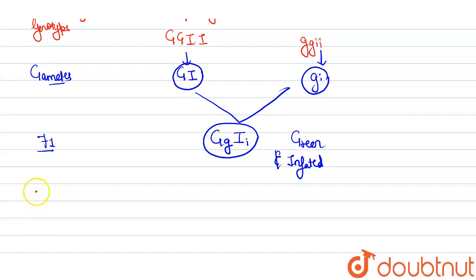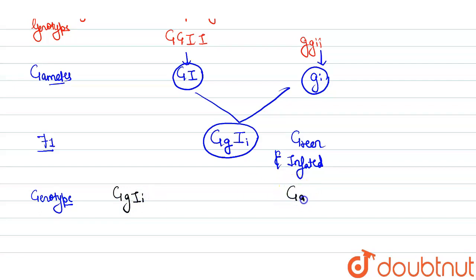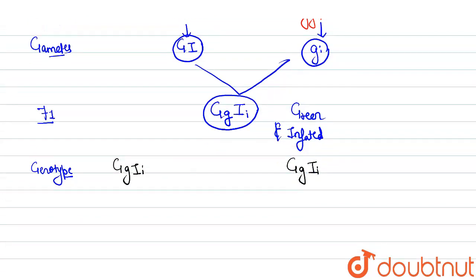Now we write the second generation. For the F2 generation, the parent genotype is capital G small g capital I small i (GgIi) crossed with capital G small g capital I small i (GgIi). Now we will draw the gametes of these parents.